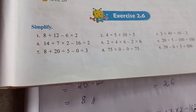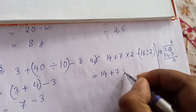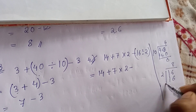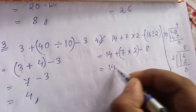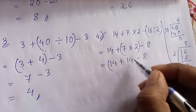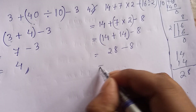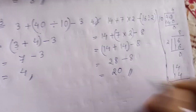Question number 4: 14 plus 7 into 2 minus 16 divided by 2. First do division: 16 divided by 2. 2 times 8 is 16, so the answer is 8. Now multiplication: 7 into 2 equals 14. Then addition: 14 plus 14 equals 28. Finally subtraction: 28 minus 8 equals 20.